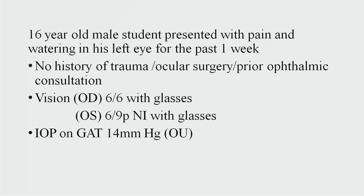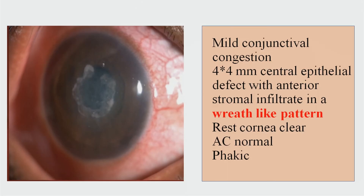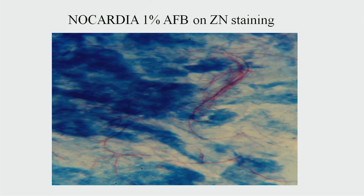Another case where histopathology plays an important role: a 16-year-old male student presented with pain and watering in his left eye for the past one week, with no history of trauma, ocular surgery, or prior ophthalmic consultation. Vision was 6/9, not improving with glasses, and pressure was within normal limits. Examination of the left eye showed mild conjunctival congestion with a 4 x 4 mm central epithelial defect with anterior stromal infiltrate in a wreath-like pattern; the rest of the cornea and anterior chamber were normal. On ZN staining, Nocardia was identified, and treatment was started accordingly.